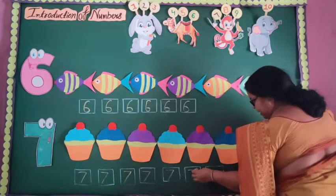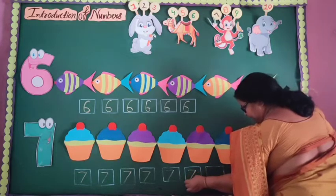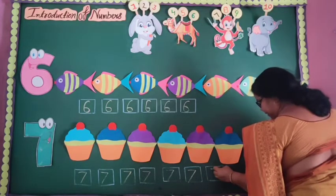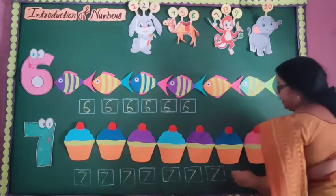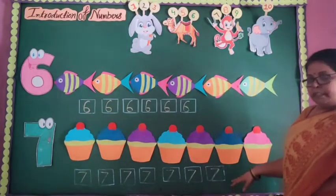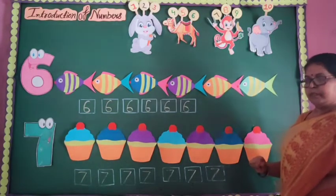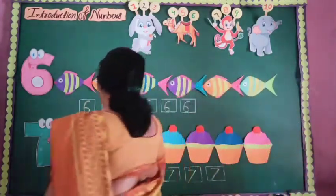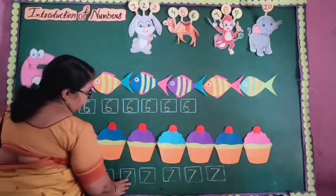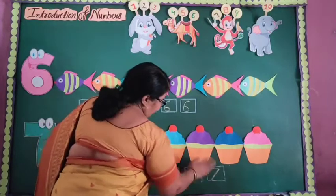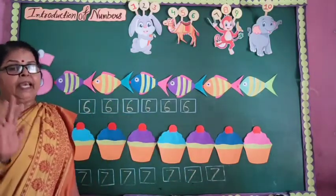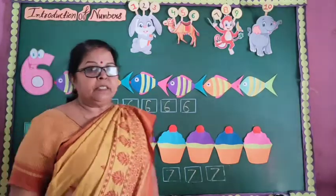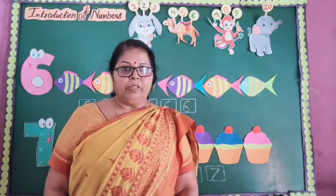Drop a sleeping line. After that, drop a slanting line. Let's make number seven. How many times I write number seven? So let's count. One, two, three, four, five, six, seven. I write seven times number seven. So students, I hope you like this video. Thank you.